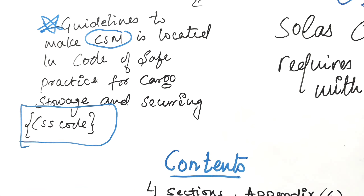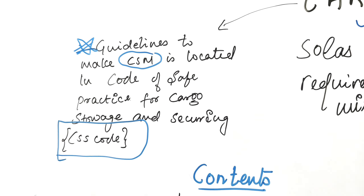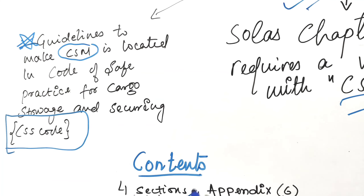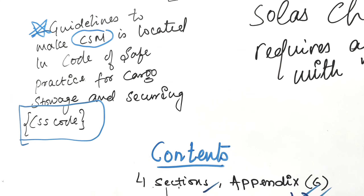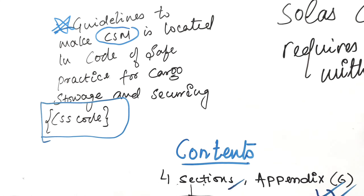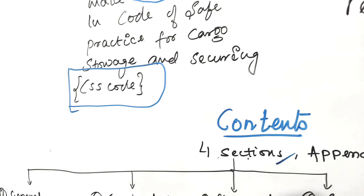So the guidelines are in the CSS code and with the help of these guidelines we need to make the cargo securing manual. Now we'll discuss about the contents. It has four sections and six appendixes. We will now see what are these four sections and the chapters in them.